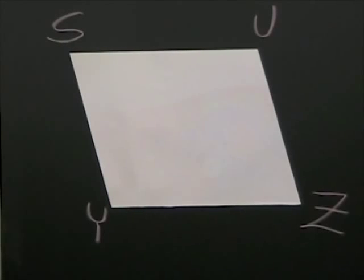She's got four sides, the opposite sides are parallel, so Susie is a parallelogram.